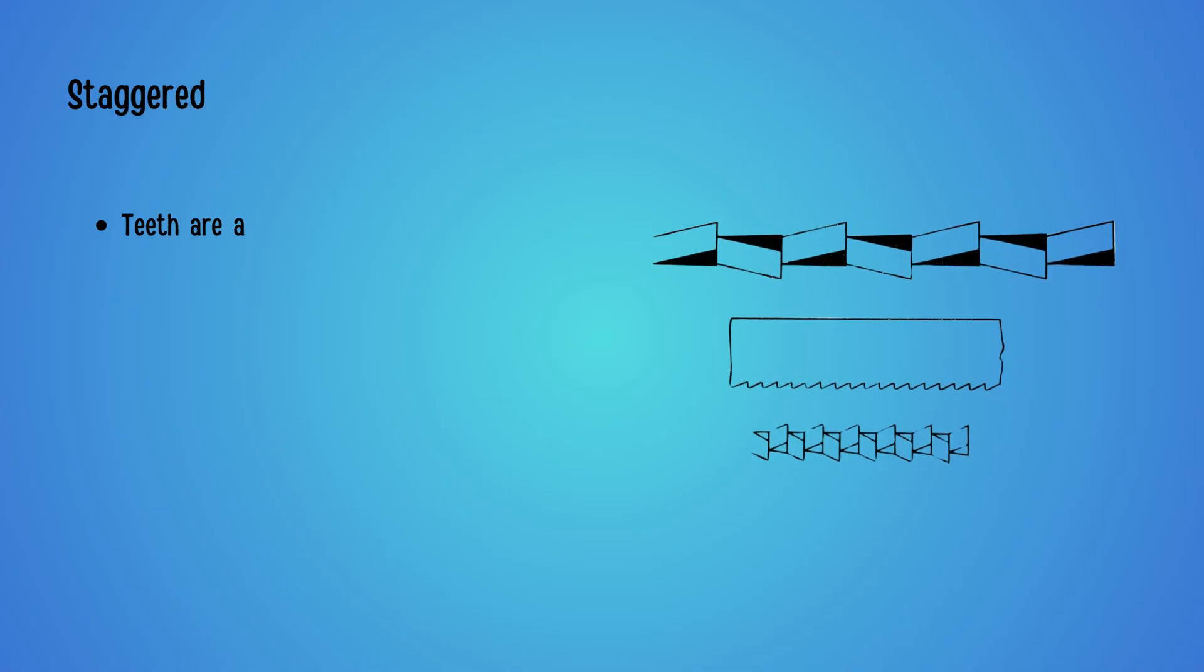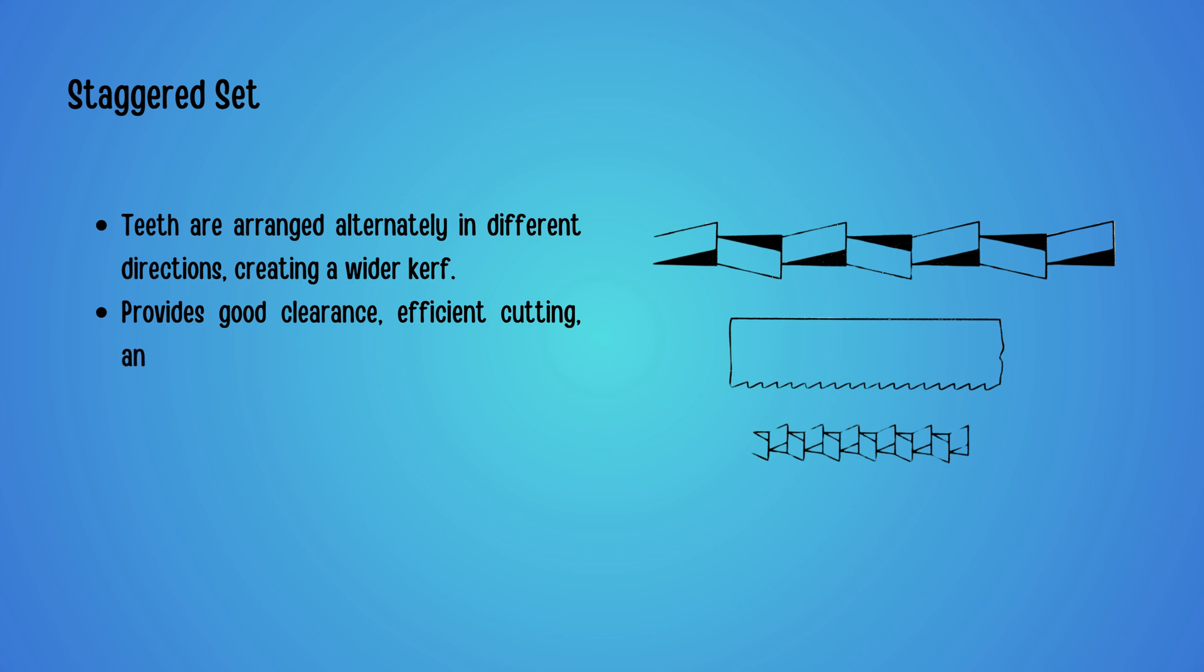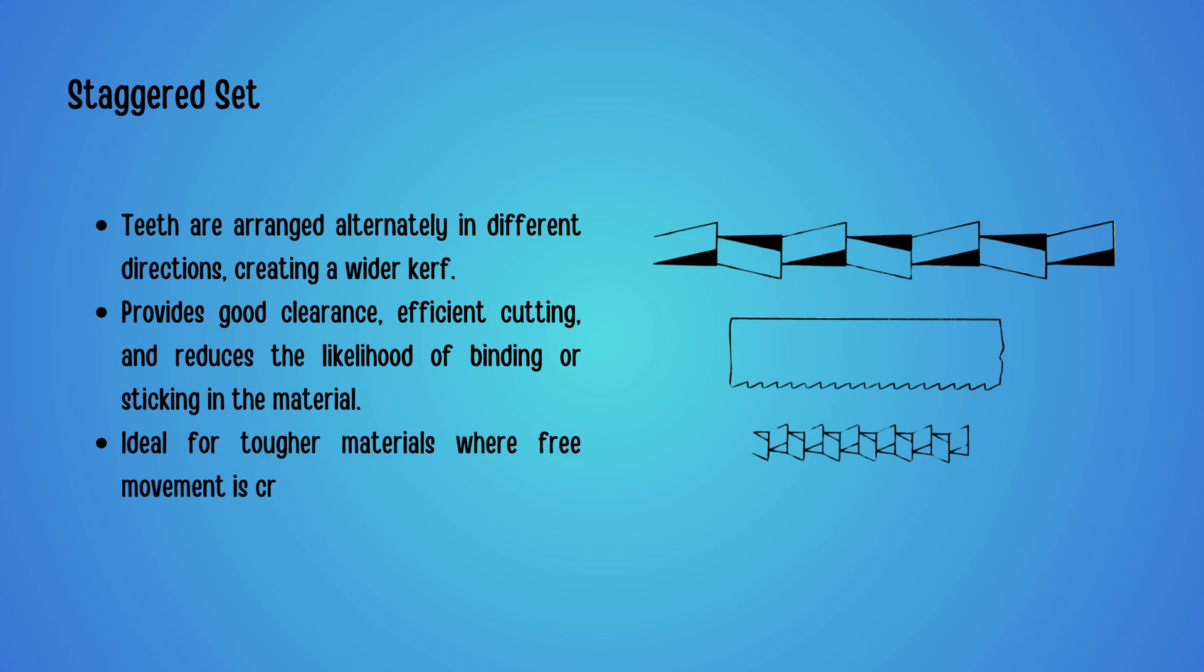There are two common types of settings. First, the staggered set. Here, the teeth alternate direction, pointing slightly left and right. This arrangement creates a wider curve, providing excellent clearance, efficient cutting and reducing the chance of the blade getting stuck. Staggered sets are ideal for cutting tougher materials where smooth movement is essential.